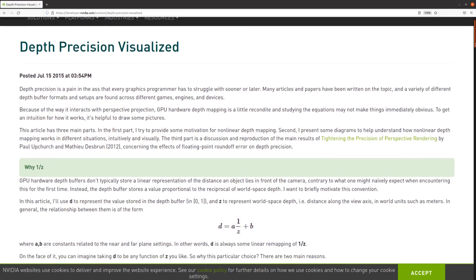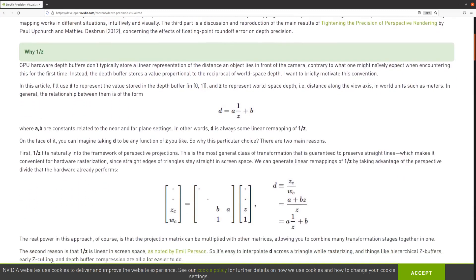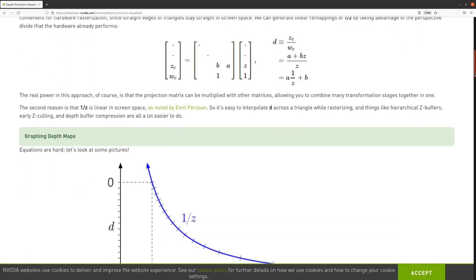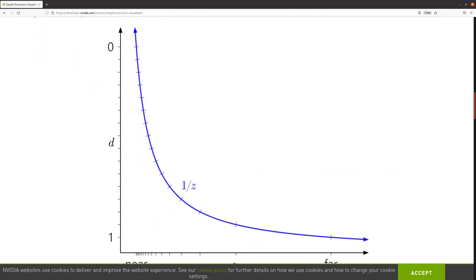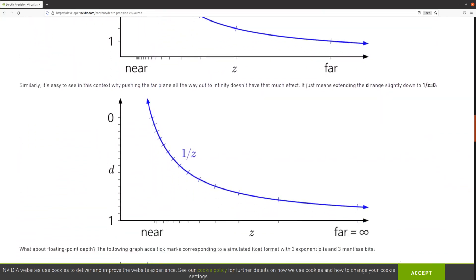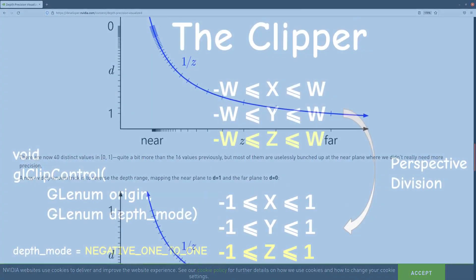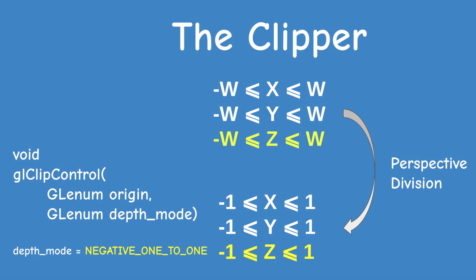There are various methods to deal with this problem, which is why OpenGL allows the developer this level of control. The topic of Z accuracy is very interesting but is a bit out of scope right now, so it will have to wait for a future video. If you never call glClipControl, the default value of depth mode is negative 1 to 1.